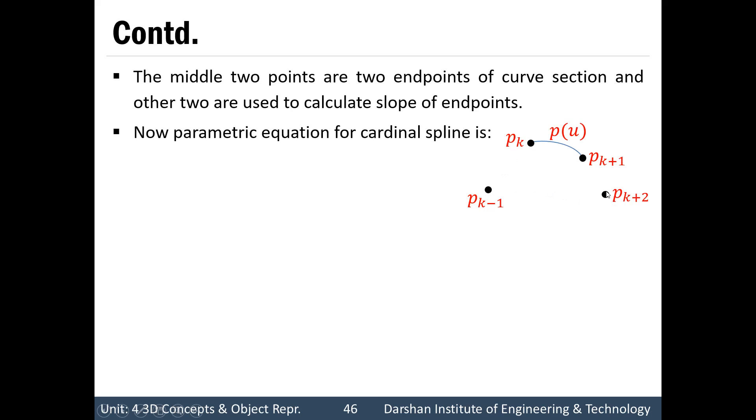Now, parametric equation for cardinal spline is first p(0) equals to pk, that is starting point of this curve section. Ending part of this curve section will be pk+1, that is p(1) equals to pk+1. And now, first order derivative that is p'(0) will be equals to 1/2 times (1-t) times (pk+1 - pk-1).